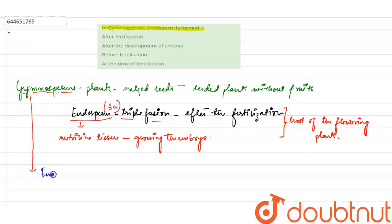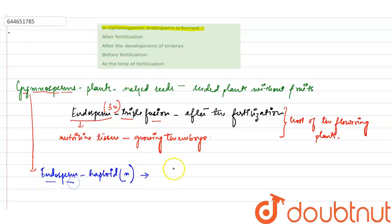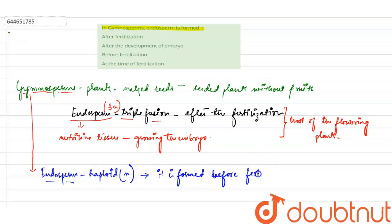Now, in gymnosperms, the endosperm which is formed is haploid in nature — its ploidy level will be n. Therefore, this endosperm, our nutritive tissue, is not formed after fertilization. It is formed before fertilization, as its ploidy level is n — that is, haploid in nature.